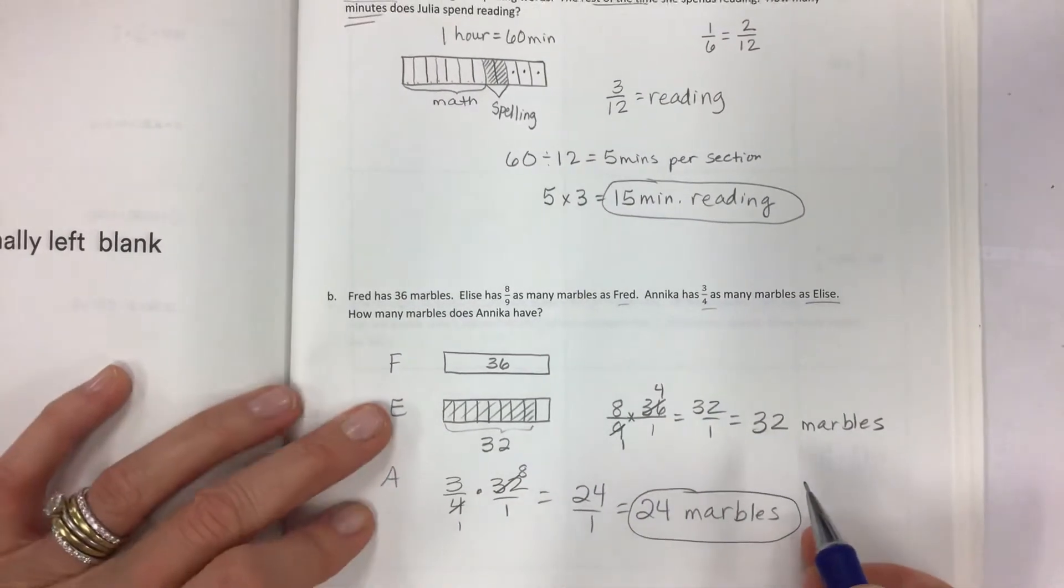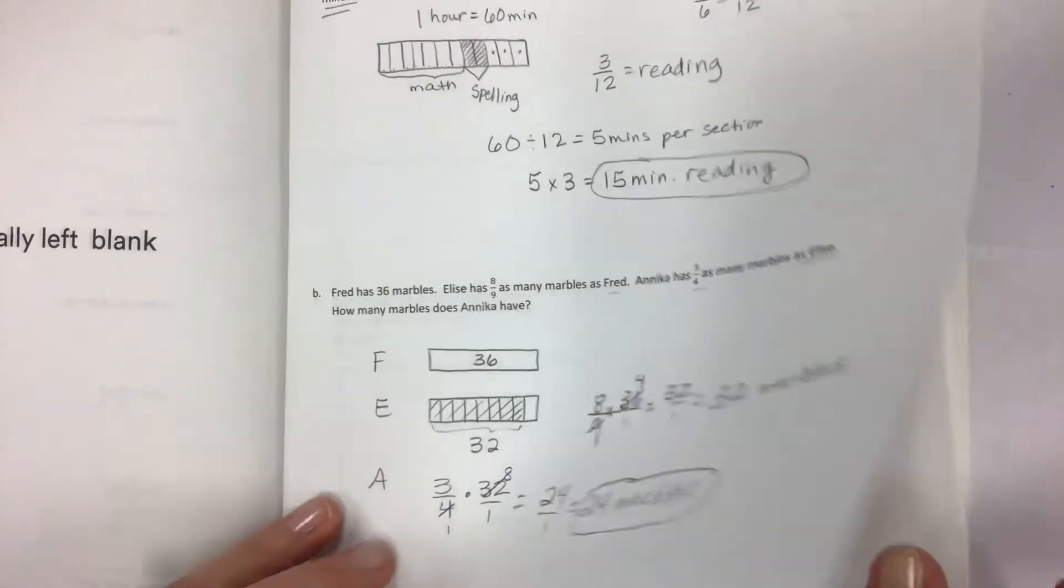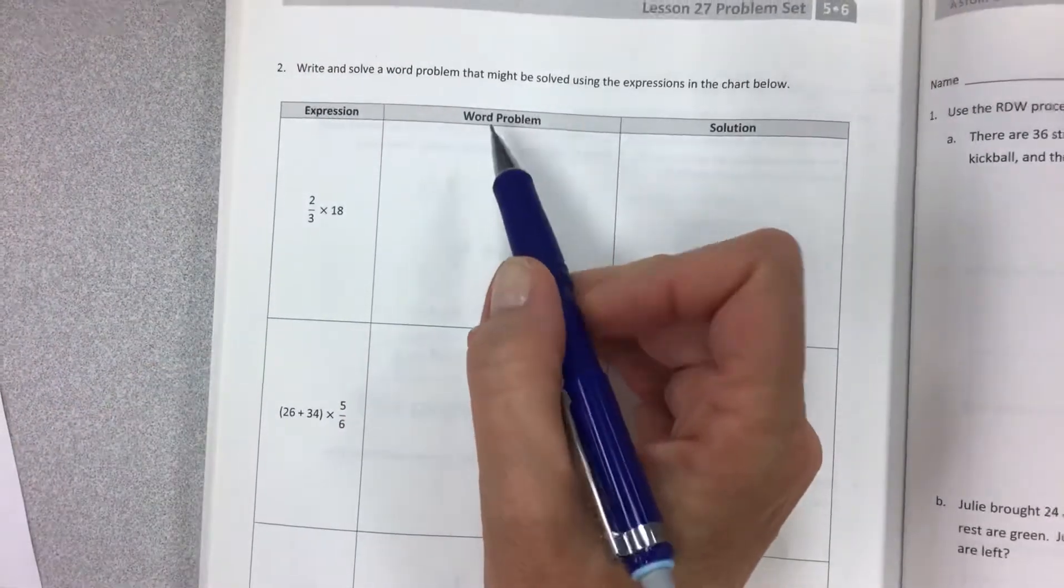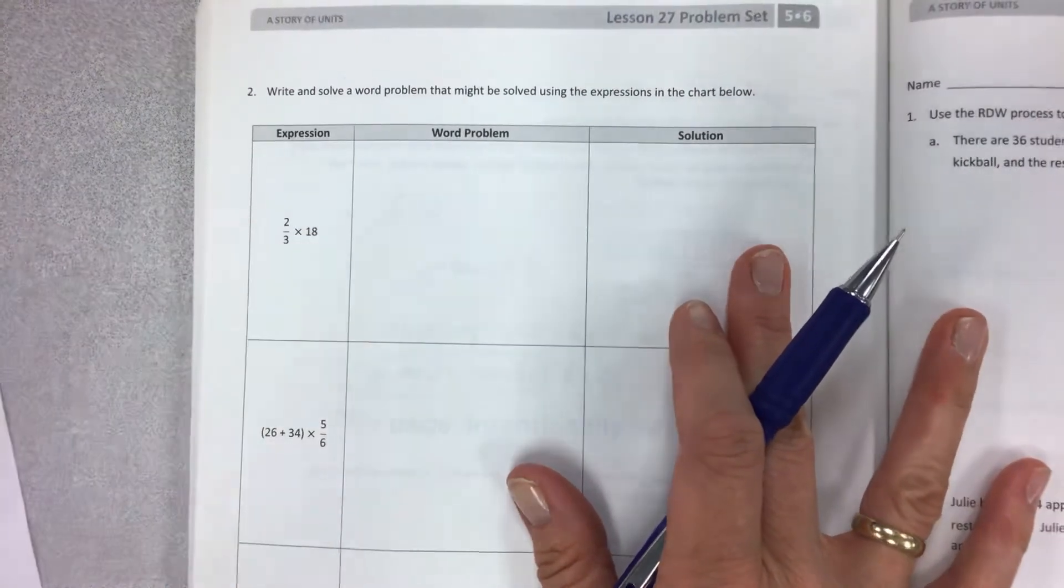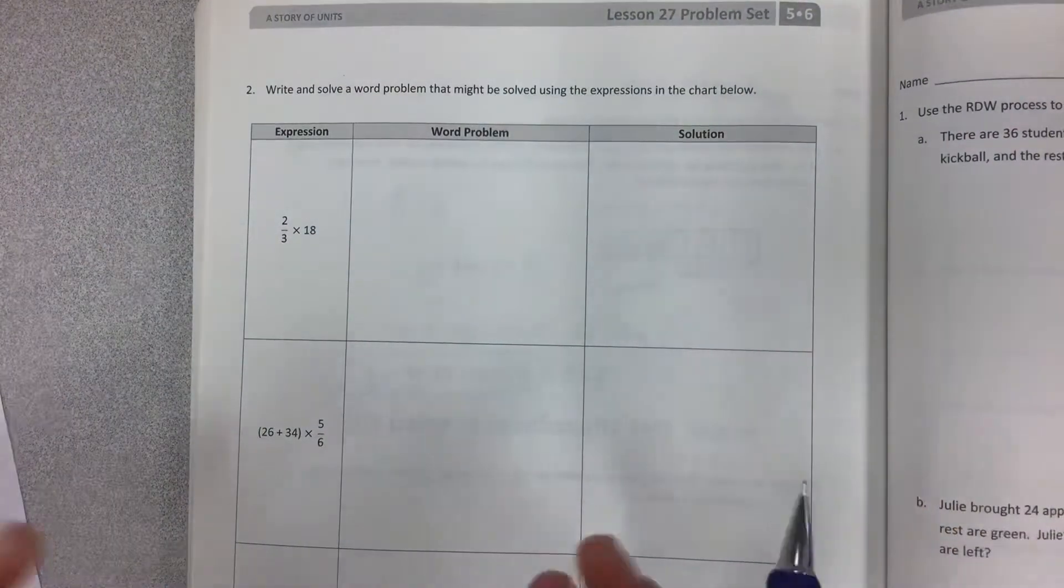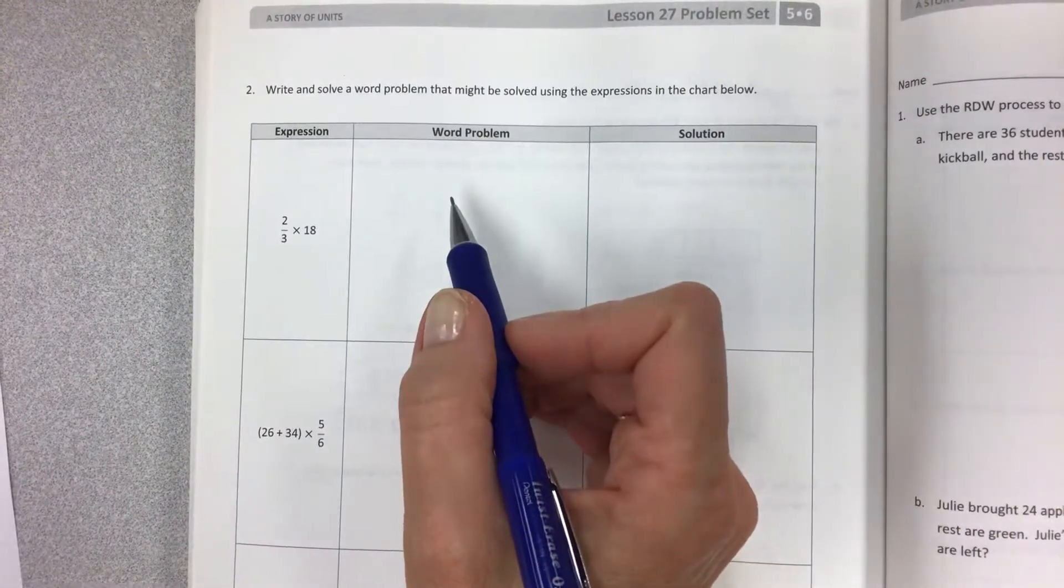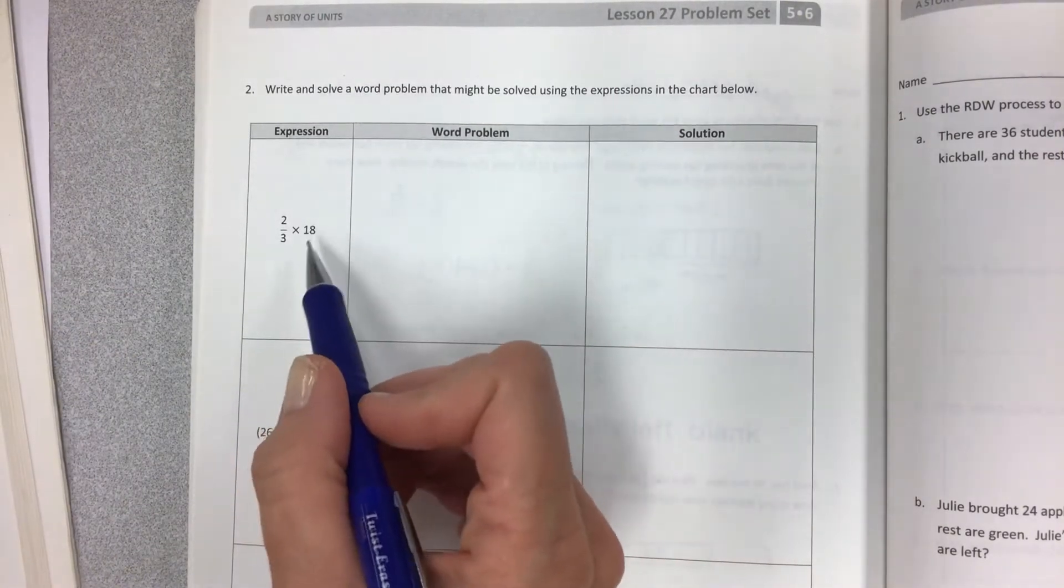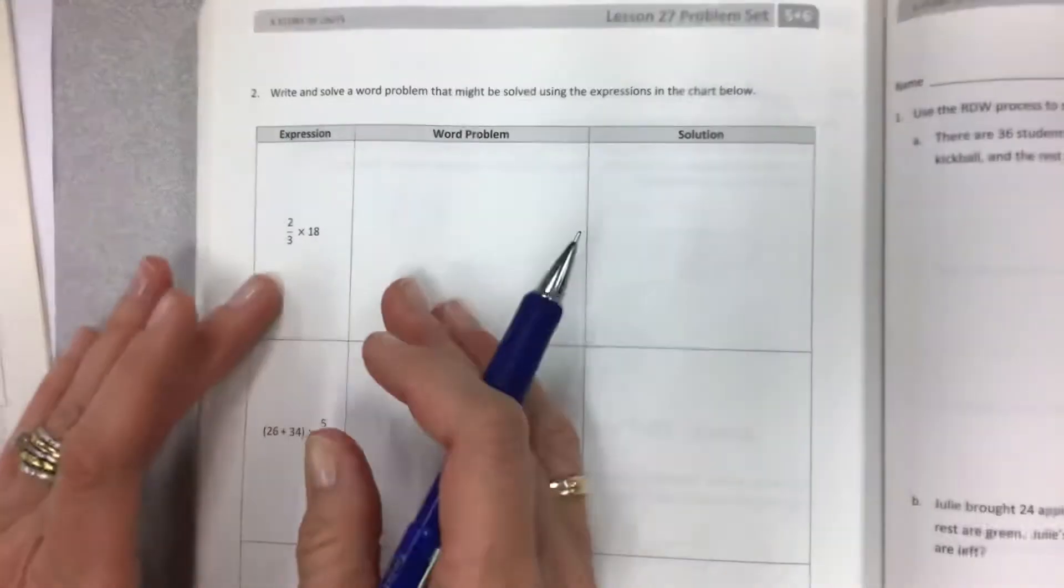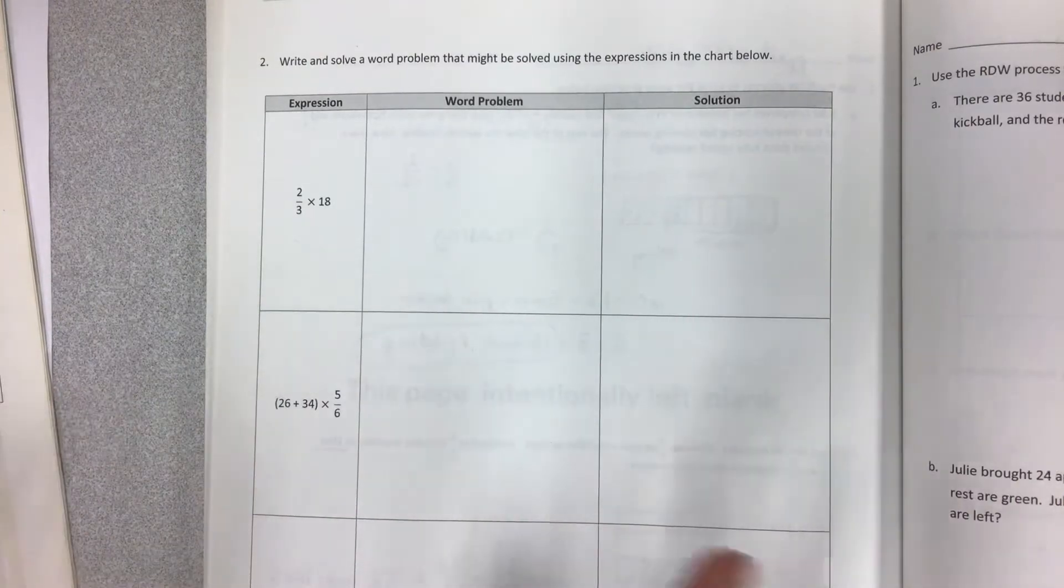Now for the back of this, we've got write and solve a word problem that might be solved using the expressions in the chart below. So again, when you write your own word problems, they're so much better because you can tell the story of what's happening and you don't have to copy my ideas which may not make any sense to you. So I'll just talk to you about what you can use for the part and the whole, or what types of items you could join, and then you can fill in the blanks with your own ideas.